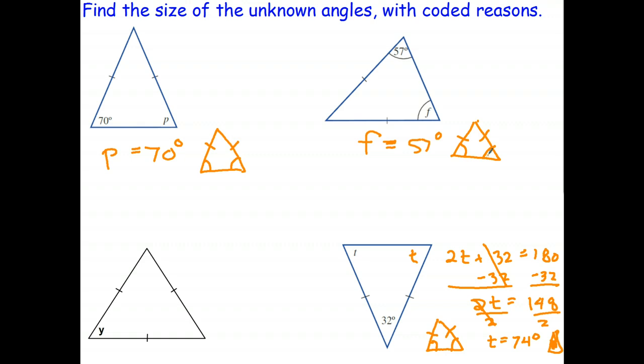And for this one down here, we have an isosceles, sorry, an equilateral triangle, since all the sides are equal. And we know that therefore all the angles are equal. And in particular, they're equal to 60 degrees. And the reason we know that is angles in an equilateral triangle all equal 60 degrees.